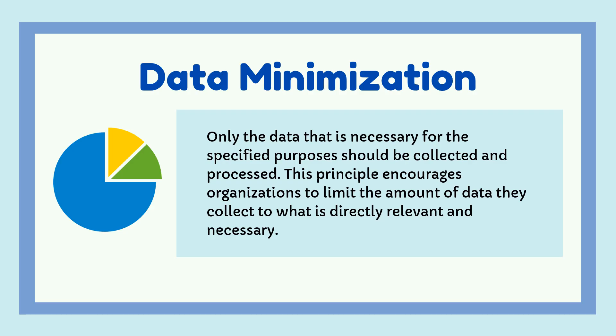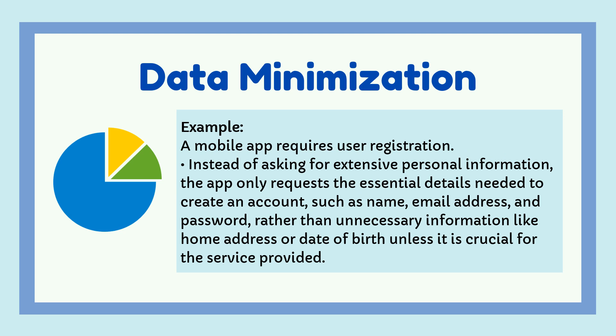3. Data Minimization. Only the data that is necessary for the specified purposes should be collected and processed. This principle encourages organizations to limit the amount of data they collect to what is directly relevant and necessary. Example: A mobile app requires user registration. Instead of asking for extensive personal information, the app only requests essential details such as name, email address, and password, rather than unnecessary information like home address or date of birth unless crucial for the service provided.